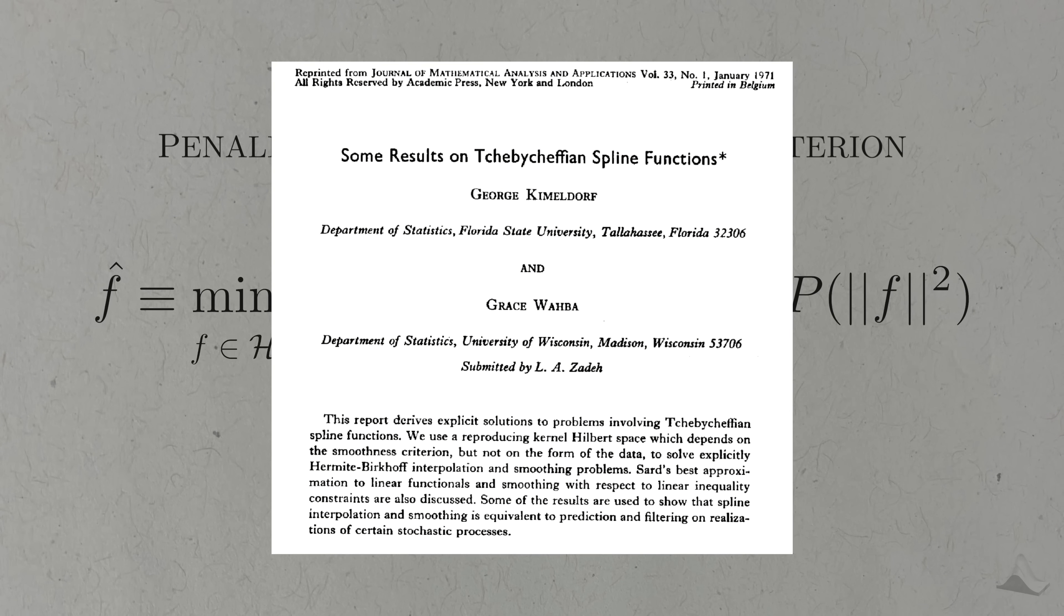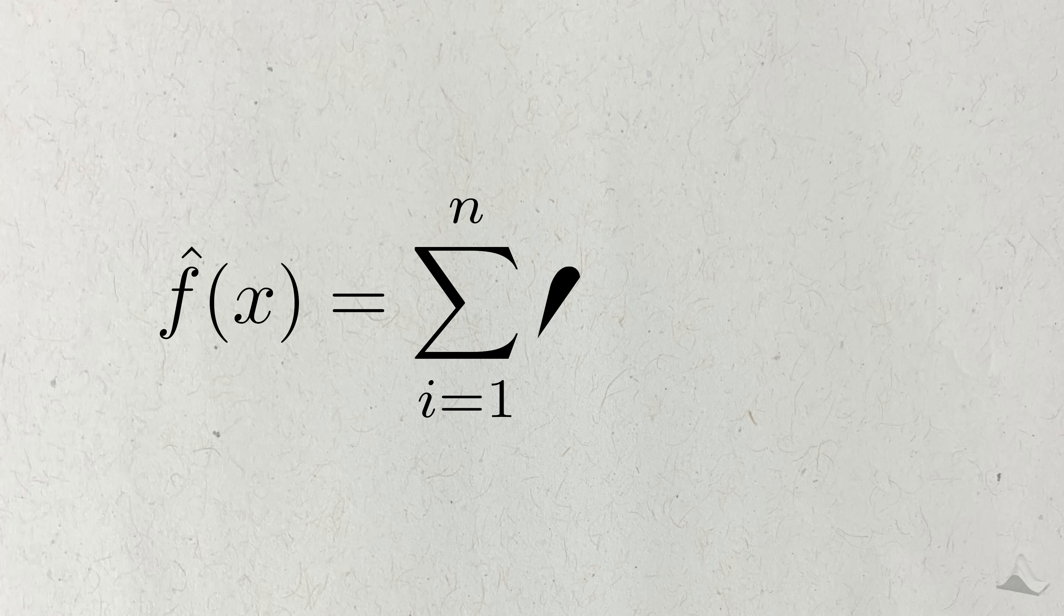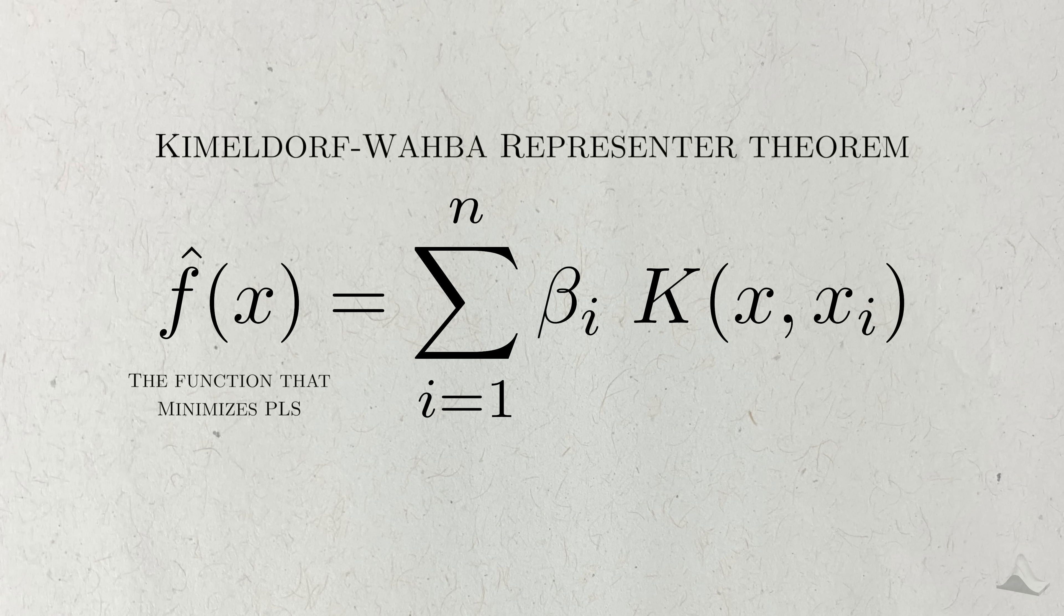In their seminal 1971 paper, George Kimeldorf and Grace Wahba published an astonishing result regarding a solution to the penalized least squares problem. Their result is known as the Kimeldorf-Wahba representer theorem, and it states that the function that minimizes the penalized least-squared criterion takes the following form. There is a lot to unpack with this theorem, so we'll walk through it slowly.